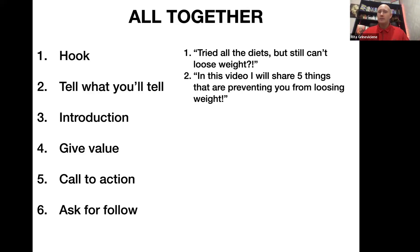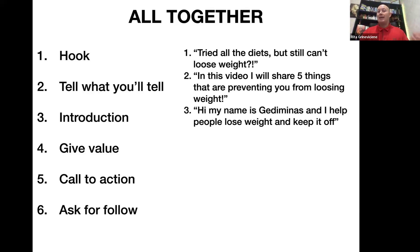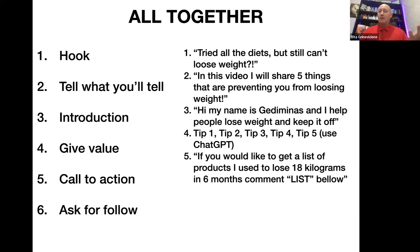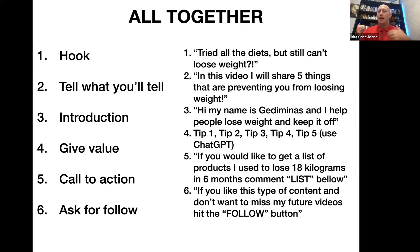Here's how that looks in a video: 'Are you tired of all the diets but still can't lose any weight? In this video I'm going to share with you five things that are preventing you from losing weight. Hi, my name is Gediminas and I help people lose weight and keep it off.' Then you give tips one through five. And by the way, you don't need to come up with this content yourself — just go on ChatGPT and type 'give me five foods not to eat if you want to lose weight' and it will give you a bunch of tips. Then for step five: 'If you'd like to get a list of products I used to lose 18 kilograms in six months, comment list below.' They comment 'list,' and now you DM them the list of products — you can even include links to your online shop so they go straight and buy.